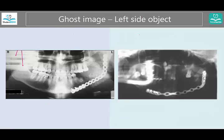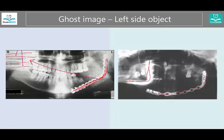Here you can see a bar that's in the patient's jaw, probably implanted due to trauma. Do you see those lines? Those are the ghost images. Notice all three characteristics: higher up, on the opposite side, and blurry. This next example is very similar but the ghost image looks a little different.